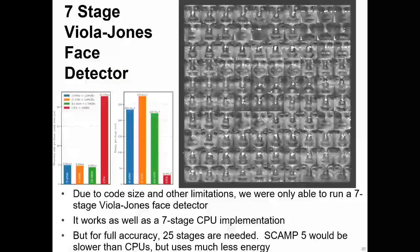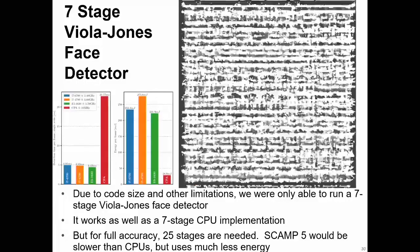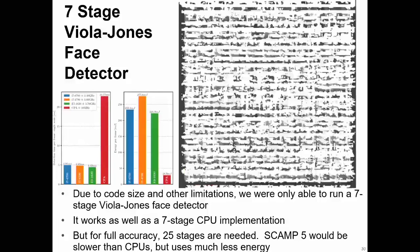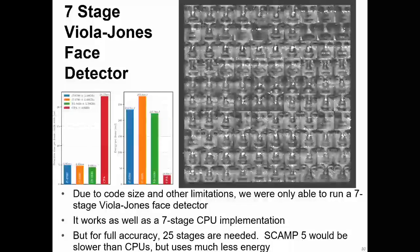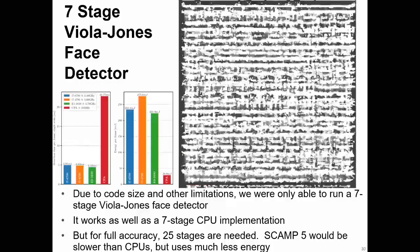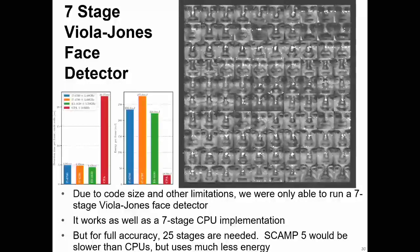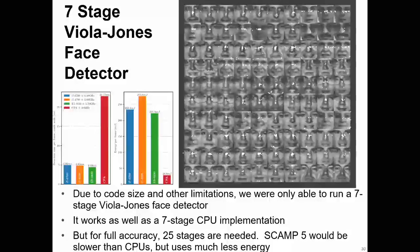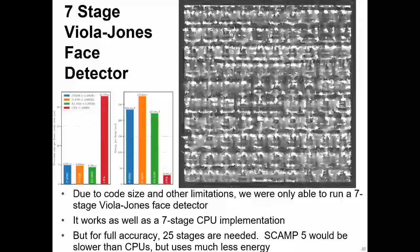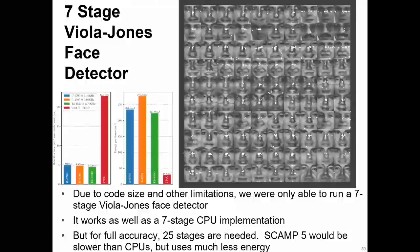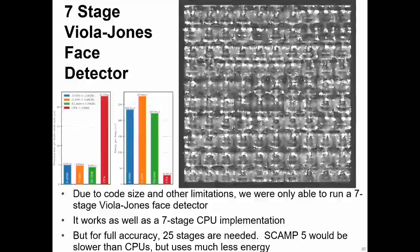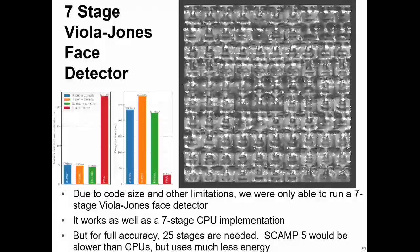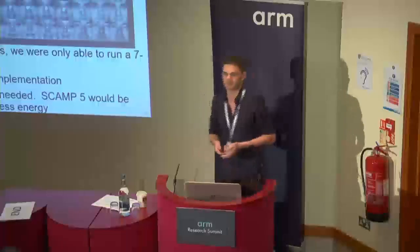We implemented a simple seven-stage Viola-Jones face detector, using a much more naive approach than the original paper — they use the integral image to do sums in constant time, whereas we just naively sum up all values. Even so, we achieve almost the same performance as the CPU, keeping in mind that our device runs at 10 MHz versus the CPU's multiple gigahertz — still the same order of magnitude — using a much less sophisticated approach and much less energy than the CPU or any GPU.